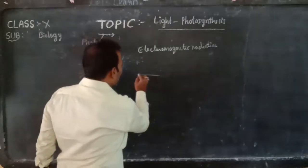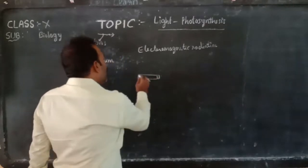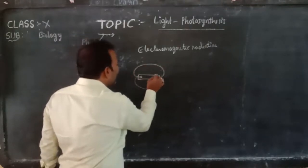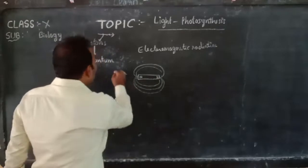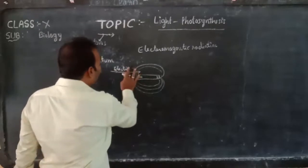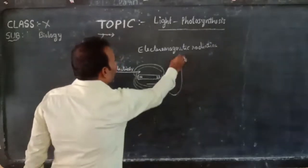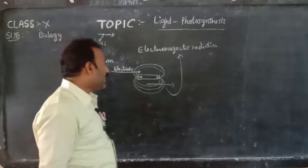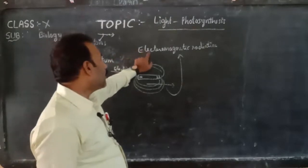This is a magnet with north and south poles. The force of attraction of the magnet occurs at a certain distance around the magnet — this is called the magnetic field. If we introduce electricity into the magnetic field, some radiation is emitted. This is called electromagnetic radiation.